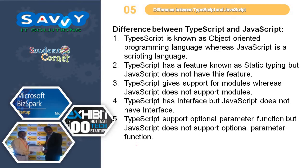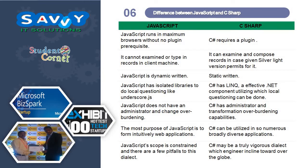The difference between TypeScript and JavaScript: TypeScript is known as an object-oriented programming language whereas JavaScript is a scripting language. TypeScript has a feature known as static typing but JavaScript does not. TypeScript gives support for modules whereas JavaScript does not support modules. TypeScript has interfaces but JavaScript does not. TypeScript supports optional parameter functions but JavaScript does not. TypeScript runs in most browsers without plugin prerequisites, whereas JavaScript requires a plugin. TypeScript cannot read or write files on the client machine, while TypeScript can read and write files if the Silverlight version permits.